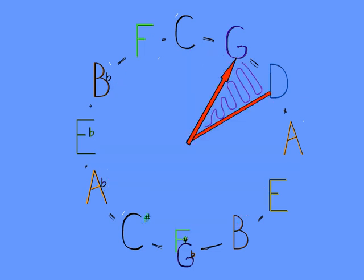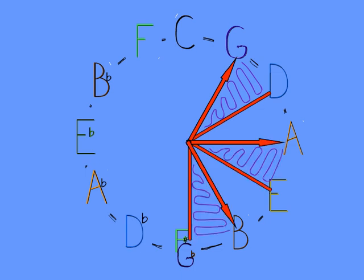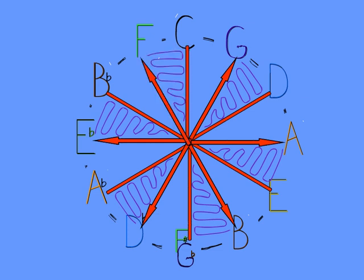If we start on the G, we get a different set. We get G and D, A and E, B and F sharp, D flat and A flat, E flat and B flat, and F and C.